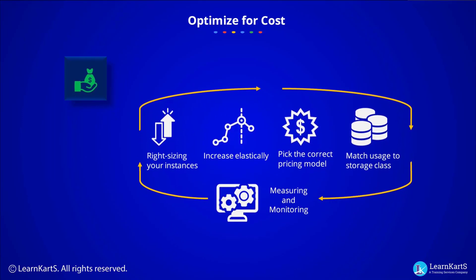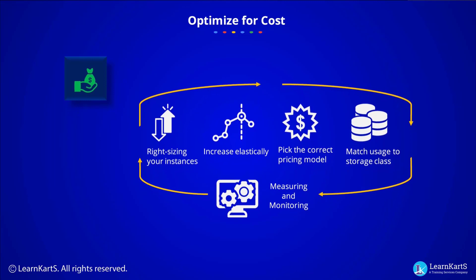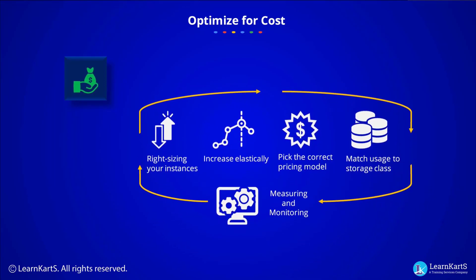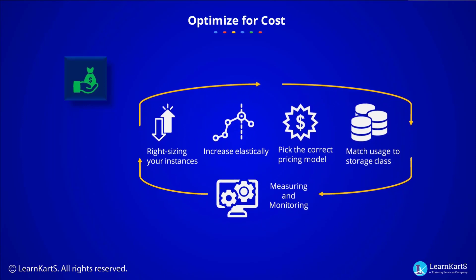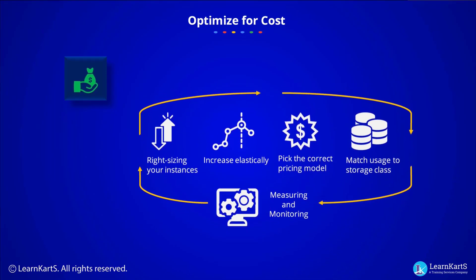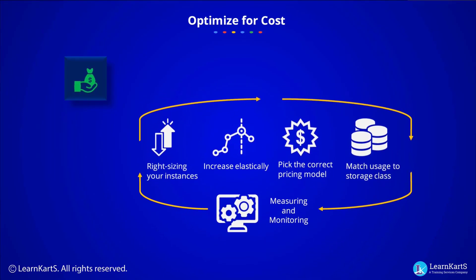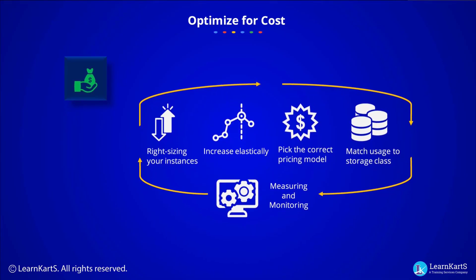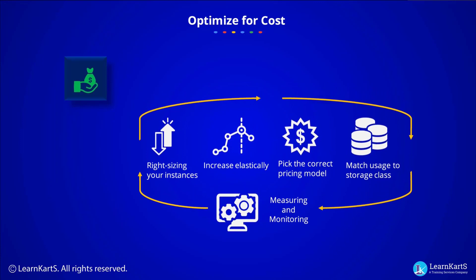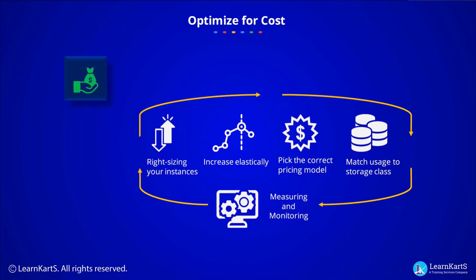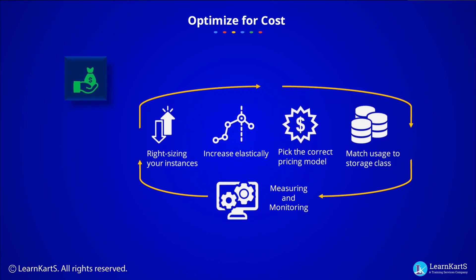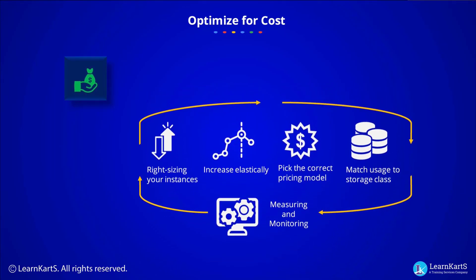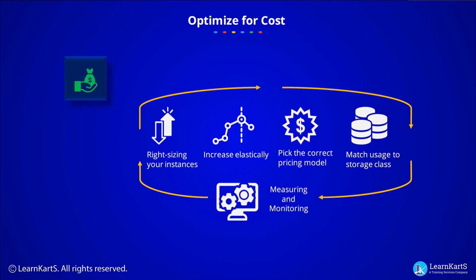You can reduce costs by selecting the right types, configurations, and storage solutions to suit your needs. Implement auto-scaling so that you can scale horizontally when required or scale down when necessary. Take advantage of the variety of instance purchasing options — reserved and spot instances — while buying EC2 instances, and match your usage to the storage class to reduce cost.